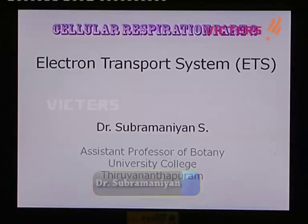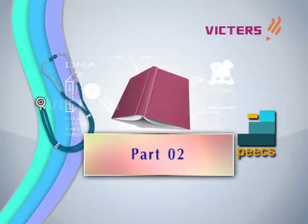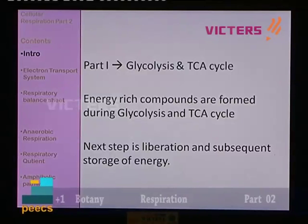Dear students, today we are going to discuss the second part of cellular respiration — the electron transport system. In Part 1 of cellular respiration we discussed glycolysis and TCA cycle, and as a result of glycolysis and TCA cycle we have energy-rich compounds which are formed during those processes. The next step is the liberation and subsequent storage of energy.